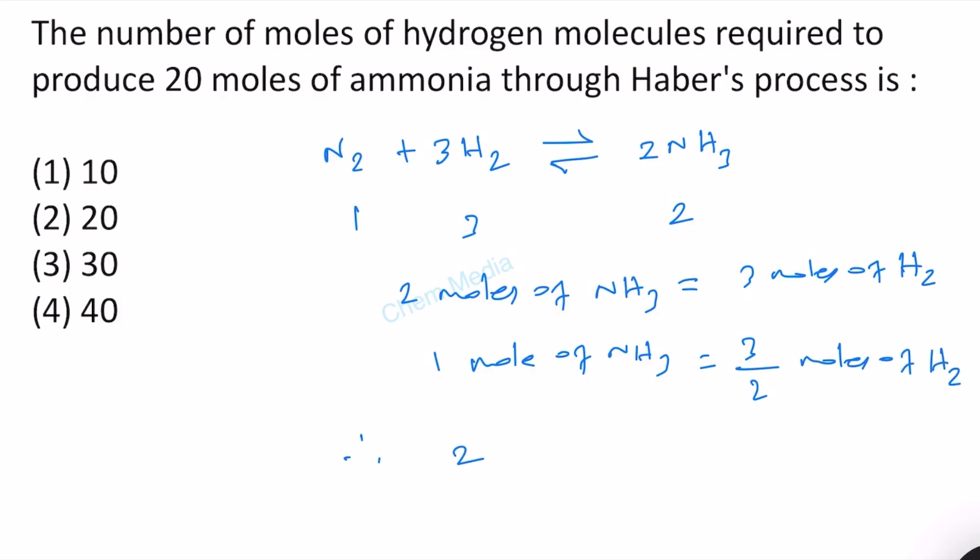If we want to produce 20 moles of ammonia, then three by two times 20, and therefore that is equal to 30 moles of H2. Therefore, answer three is correct.